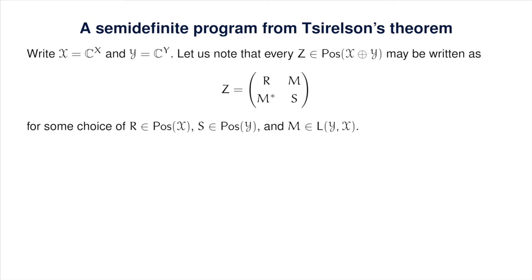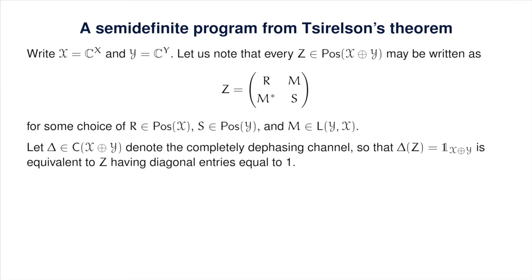In general, M doesn't necessarily need to have real number entries, but this won't be a concern. There's really no difference in the final result whether we work over the real numbers or the complex numbers, but we'll stick with complex numbers since that's the default in quantum information theory. Next, let delta denote the completely dephasing channel acting on the direct sum of X and Y—the channel that leaves diagonal entries alone and zeros out all off-diagonal entries of its argument.